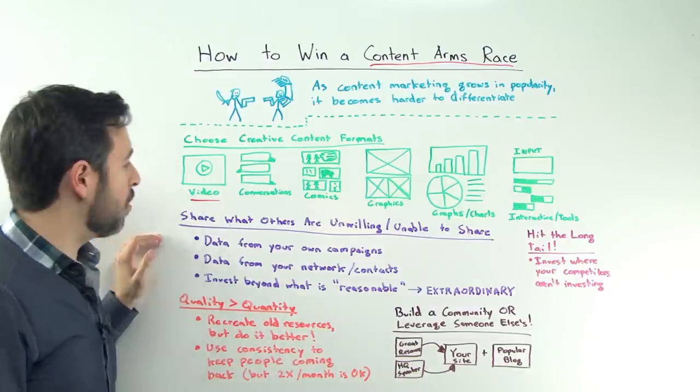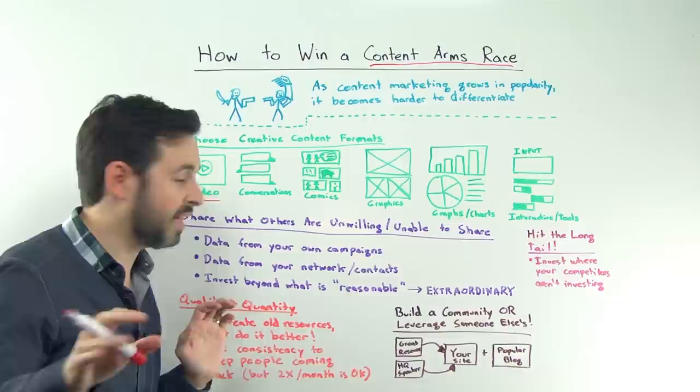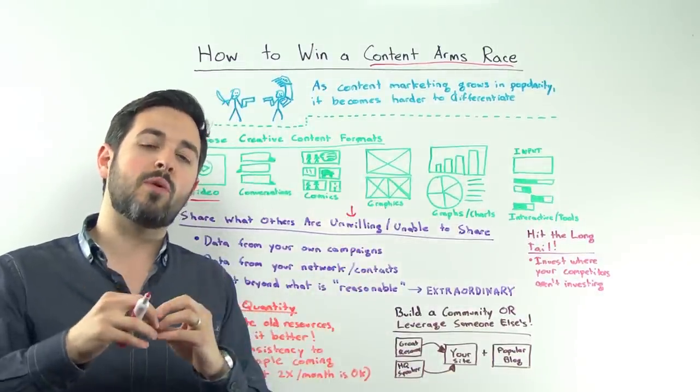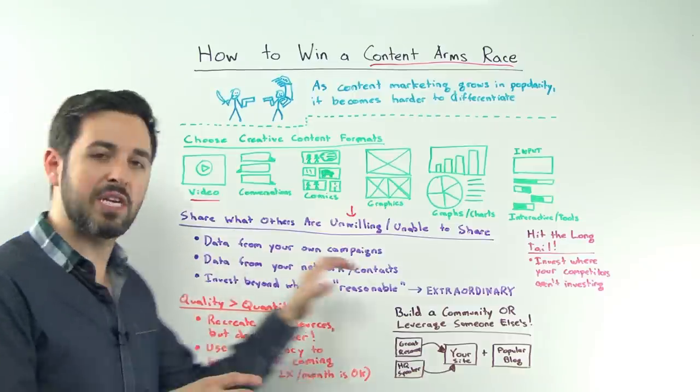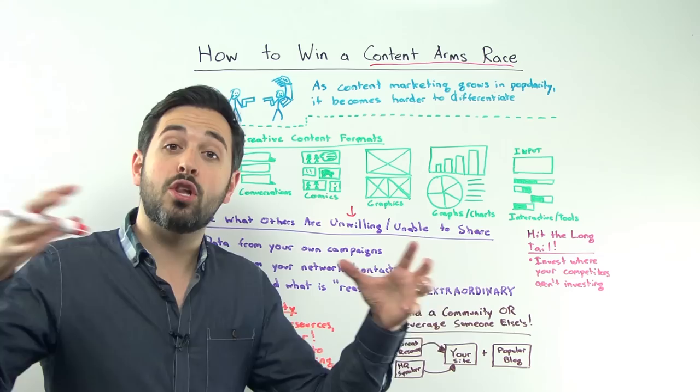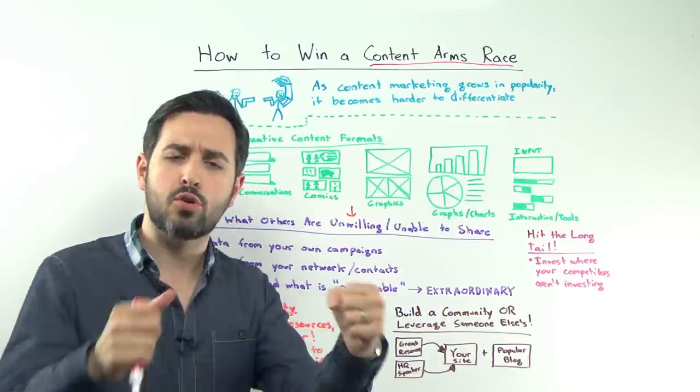Next step, share what others are unwilling or unable to share. And this can be highly valuable. So when I say unwilling, what I'm really talking about is some people aren't willing to go to the length of transparency to share data from their own campaigns or data from their networks, or they don't have a large enough community to be able to survey, or they don't have a network where they can reach out to folks who have that type of information or can make those kinds of contributions.